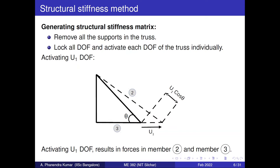Now coming to the method. First, before starting, I have defined two support conditions — a roller support and a simply supported boundary condition. These boundary conditions should be removed before starting. This will be the first step of the method: remove the support conditions. When the support conditions are removed, we are left with the triangular three-element truss structure.